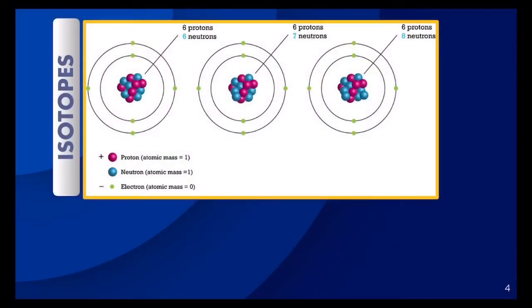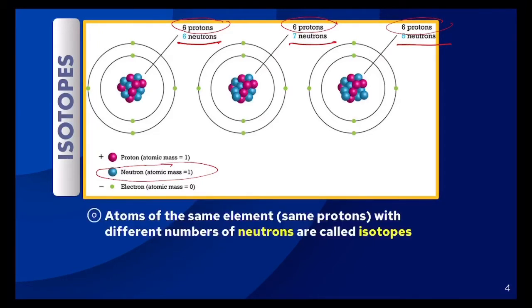Let's take a look at another representation of the same isotopes. If you look at the proton number, we have six protons in each of these pictures, so that's how I know that this is still carbon. If you take a look at the number of neutrons shown in blue, we've got six neutrons in the first picture, seven neutrons in the second, and eight neutrons in the third. The definition of an isotope is when you have atoms of the same element but each has a different number of neutrons.